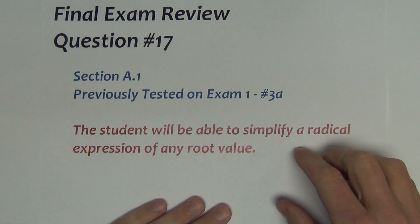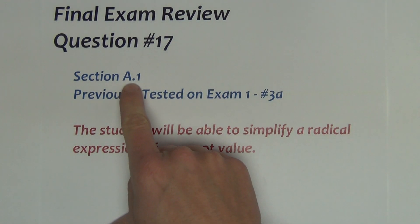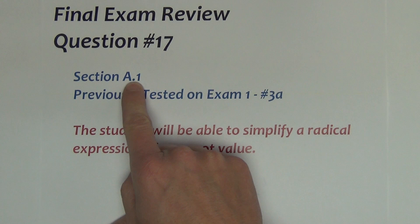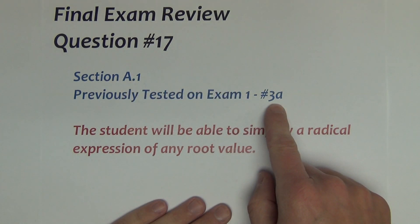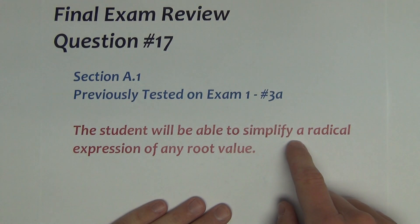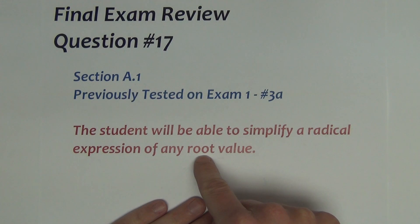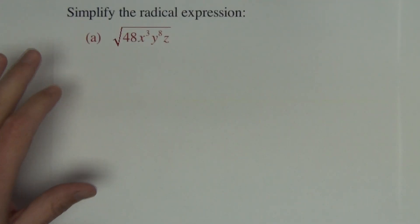Question 17 on the final exam comes from section A.1. That's the very first section that we covered this year. It was previously tested on exam 1, question number 3A. And this question is going to test whether you can simplify a radical expression of any root value. You're probably going to see more than likely a square root or a cube root, but any root value would be fair game.